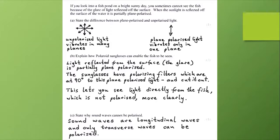Part B: explain how polaroid sunglasses can enable the fish to be seen. Well, light reflected from the surface, the glare as we might call it, is partially plane polarized. The sunglasses have polarizing filters which are 90 degrees to this plane polarized light and cut it out. This lets you see light coming directly from the fish, which is not polarized, much more clearly.